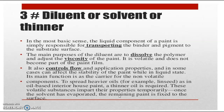Next, we will move to the dilutant, solvent, or thinner. It is the major component of a paint. The liquid component of a paint is responsible for transporting the binder and the pigment to the substrate surface, acting as a transporting material. The main purpose of the dilutant is to dissolve the polymer and to adjust the viscosity of the paint. The paint's ability to bind to the surface depends on this viscosity. The thinner is volatile and does not become a part of the paint film.